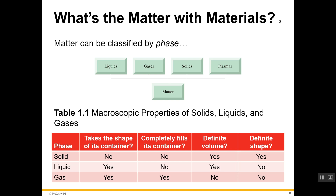The third column asks whether a substance will have a definite volume. For solids and liquids, that is definitely true. But for gases, because they expand to fill their container, a gas does not have a definite volume — its volume is basically the volume of the container it's in. If you move the gas to a container with a different volume, it will assume that new volume. The final column asks whether the substance has a definite shape: yes for solids, but not for liquids and gases, which take on the shape of their container.